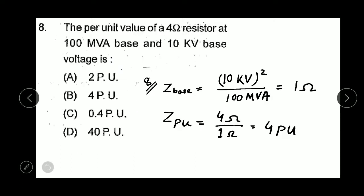Question number eight: The per unit value of a 4 ohm resistor at 100 MVA base and 10 KV base voltage is? First, we calculate the Z base, impedance base, which is KV squared by MVA. Here KV is 10 and MVA is 100, so Z base equals 1 ohm. Z per unit equals actual value by base value, which equals 4 per unit. Option B is correct.